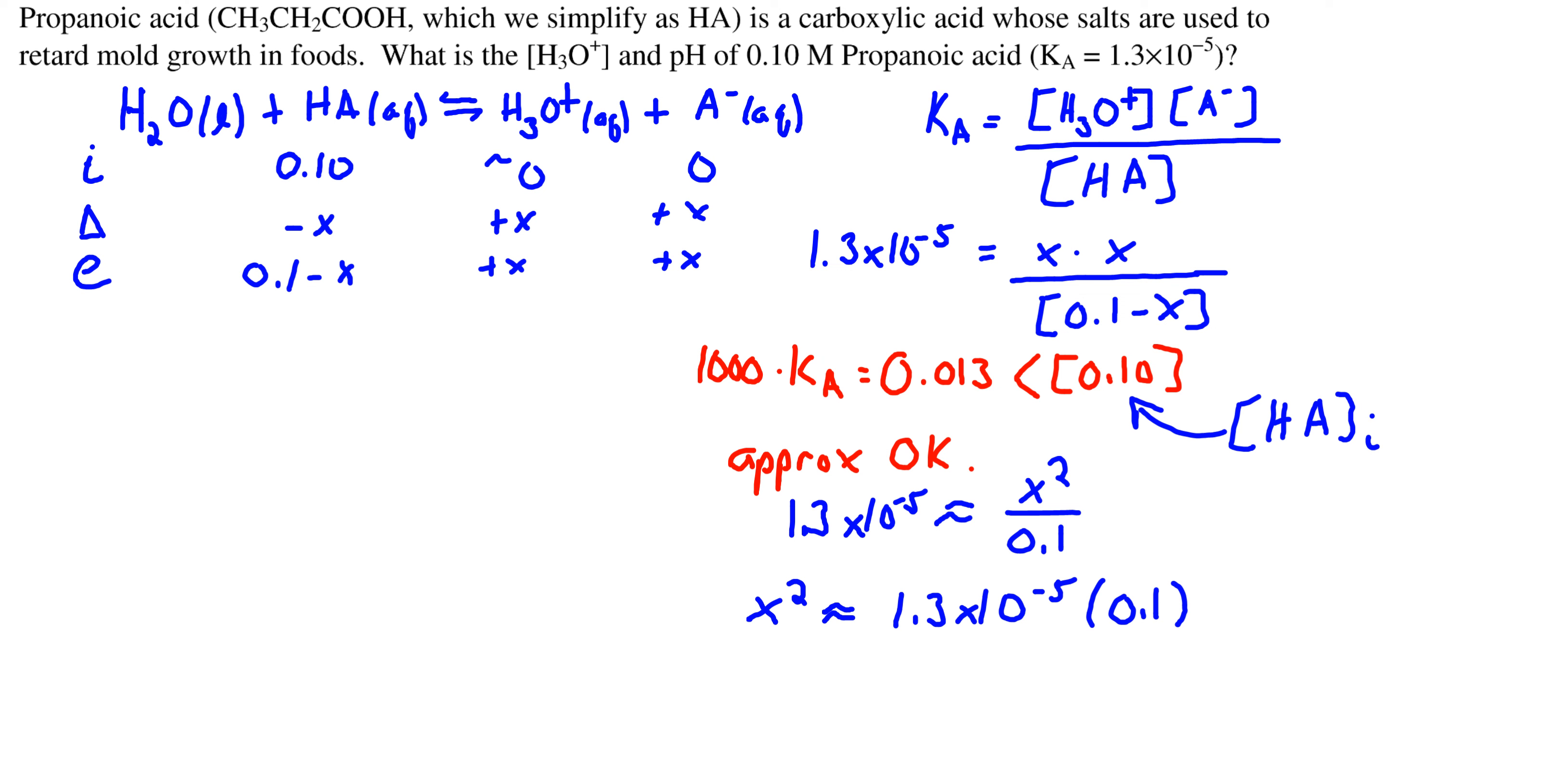We've made our simplifying approximation here, we've solved for x squared, so we're going to take the square root of each side to determine x.